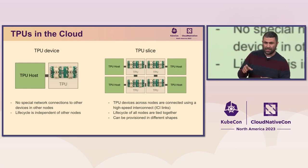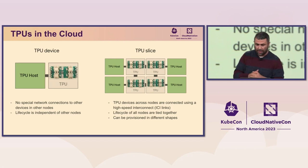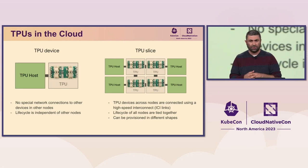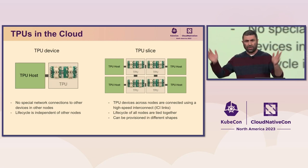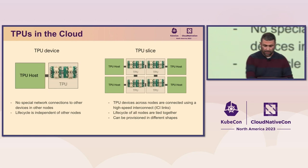Those slices can be provisioned in different shapes. Here I'm showing a two-by-two, but it can be all the way up to 64 VMs in a single slice.